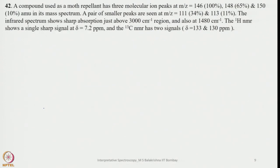Another example: a compound used as a moth repellent has 3 molecular ion peaks at m/z = 146 (100%), 148 (65%), and 150 (10%). A pair of smaller peaks appear at 111 and 113. The IR shows sharp absorption just above 3000 and at 1480, characteristic of an aromatic group. 1H NMR shows a sharp singlet at 7.2 ppm, and 13C NMR shows 2 signals at 133 and 130 ppm.